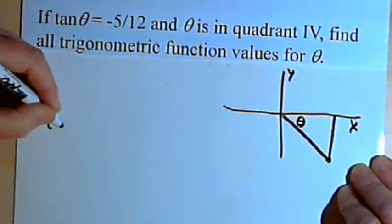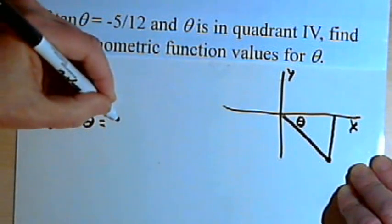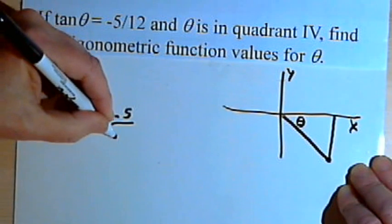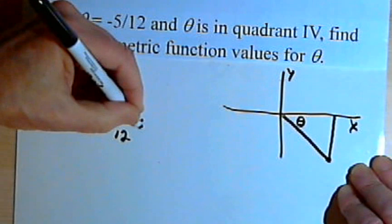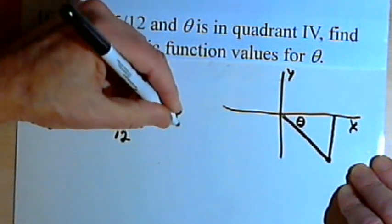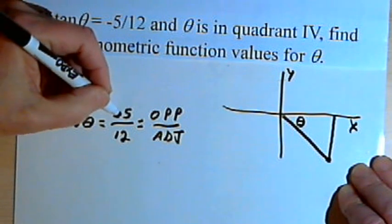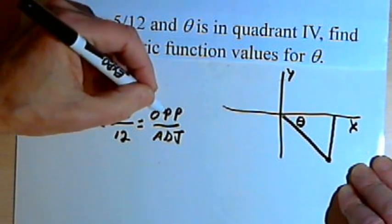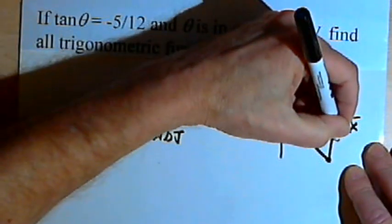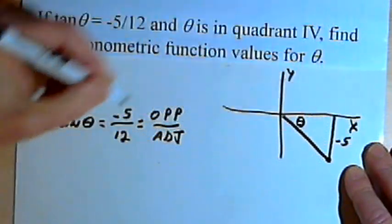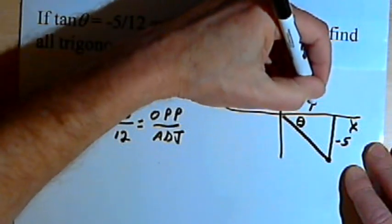Now we're told that the tangent of theta equals negative 5 over 12. And we know that a tangent is the opposite side over the adjacent side. So if we have negative 5 over 12 is the same as the opposite over the adjacent, that means the opposite side must have a length of negative 5. And the adjacent side, that's the side on the x-axis here, would have a length of 12.